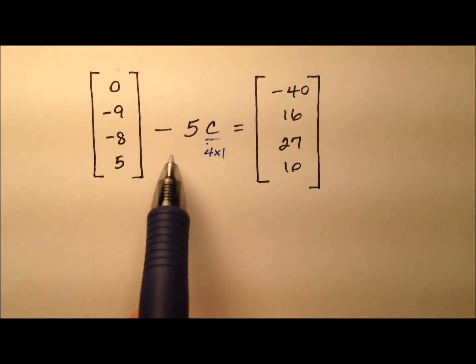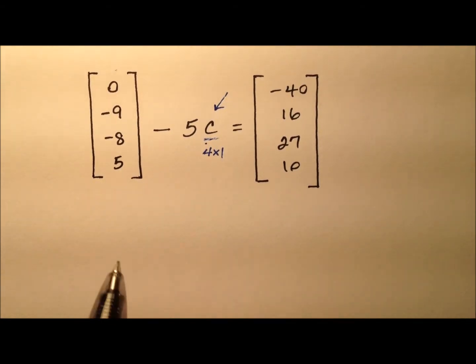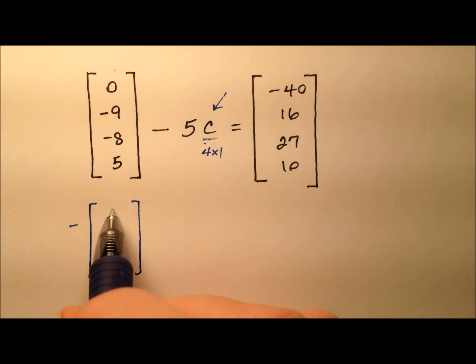In order to solve this, we're trying to isolate this C matrix variable. The first thing it looks like we need to do is subtract this matrix here from both sides of the equation.